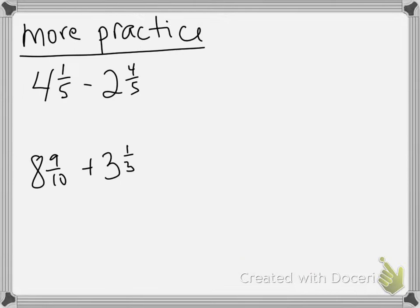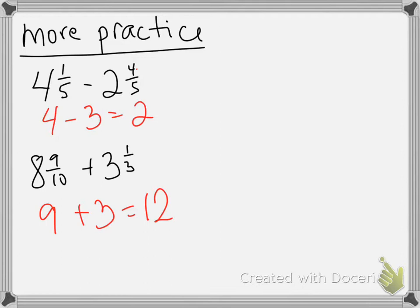Now let's practice with mixed numbers. I have 4 and 1/5: since 1 is really far from 5, that fraction rounds to 0, so it stays 4. Minus 2 and 4/5: the 4 is really close to 5, so that's a whole, making it 3. Minus 3 gives 2. Then 8 and 9/10 plus 3 and 1/3: 9/10 rounds to 1, making it 9, and 1/3 is less than 1/2, so that rounds to 3, giving us 12.